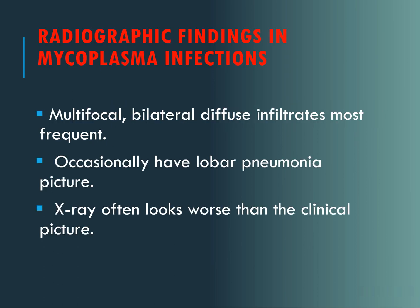The radiographic findings in mycoplasma infection show multifocal bilateral diffuse infiltrates, and occasionally patients show lobar pneumonia. The X-ray picture is quite worse than the clinical picture, which is why it is called walking pneumonia — patients are not showing severe symptoms but the X-ray shows diffuse patches of lung infiltration.